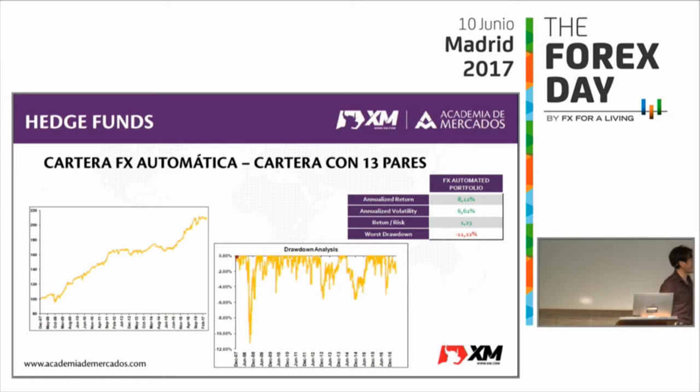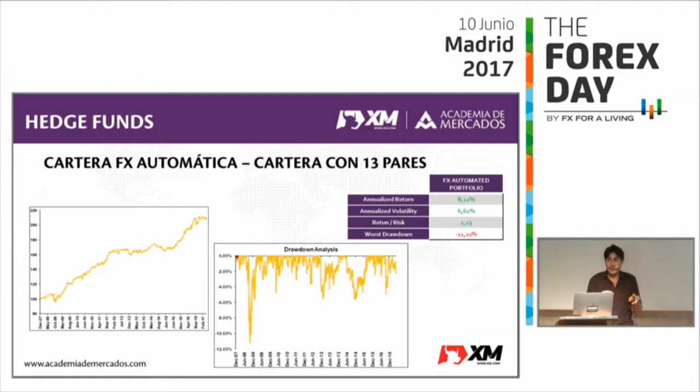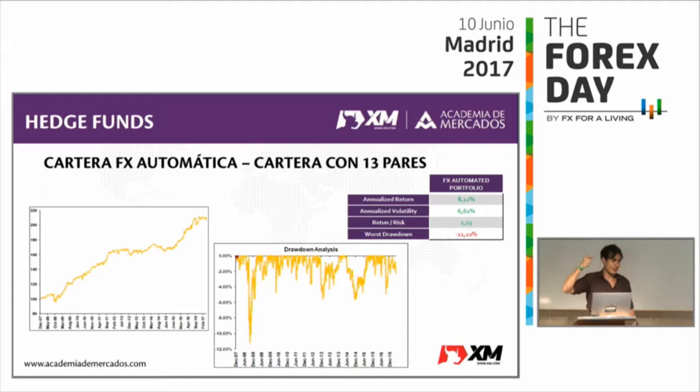Nuestro trabajo es adivinar el futuro, y el futuro es probabilidad. Haciendo estudios históricos definimos: en base a un estudio histórico puedo asignar una probabilidad de que mañana el RSI cuando está por encima de 70 caiga. Puedo coger el par euro-dólar, ver cuántas veces el RSI ha superado 70 y cuánto hubiera ganado o perdido si me hubiera vendido. Lo automatizo, lo programo, las plataformas me lo permiten y lo dejo corriendo.